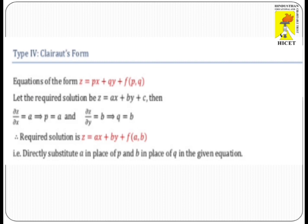Type 4 is the Clairaut form. The general equation of this form is Z = P·X + Q·Y + F(P,Q). In this case, we consider the required solution as Z = A·X + B·Y + C. Then P equals A and Q equals B. Substituting in the given equation, we obtain the complete integral.